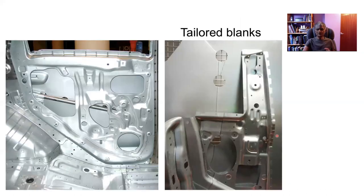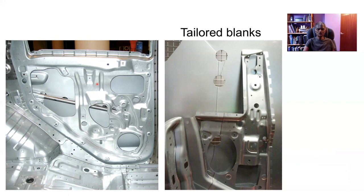If you look at this complex component — this is an inner panel of a car door — it is obviously advantageous to form this into this complicated shape rather than join up different bits of metal to get that structure. We also want to make the steel as strong as possible so that the weight of the door is reduced, so it needs to be strong and it needs to be formable, and some of the forming needs to be done in the presence of holes in the blank.